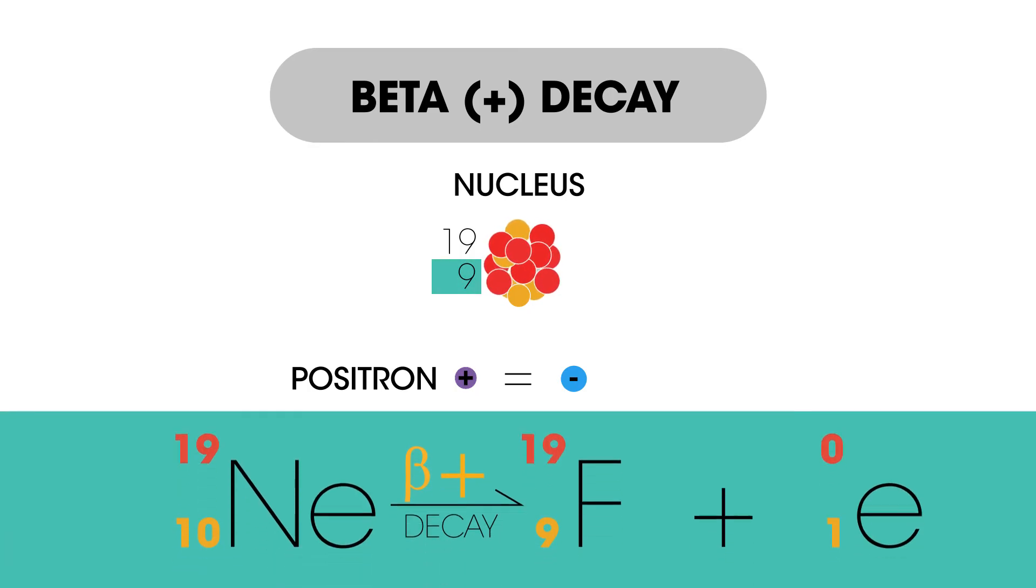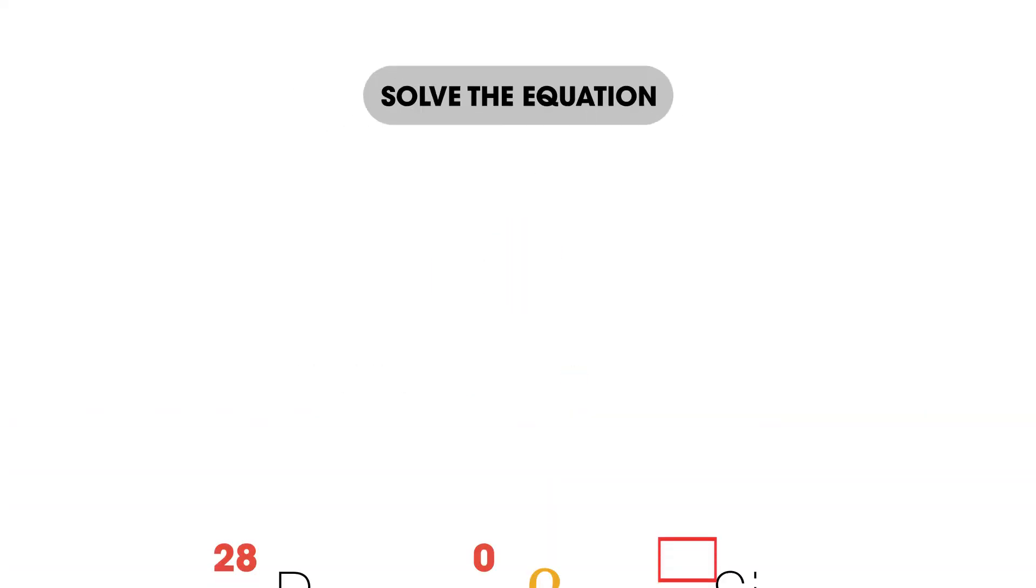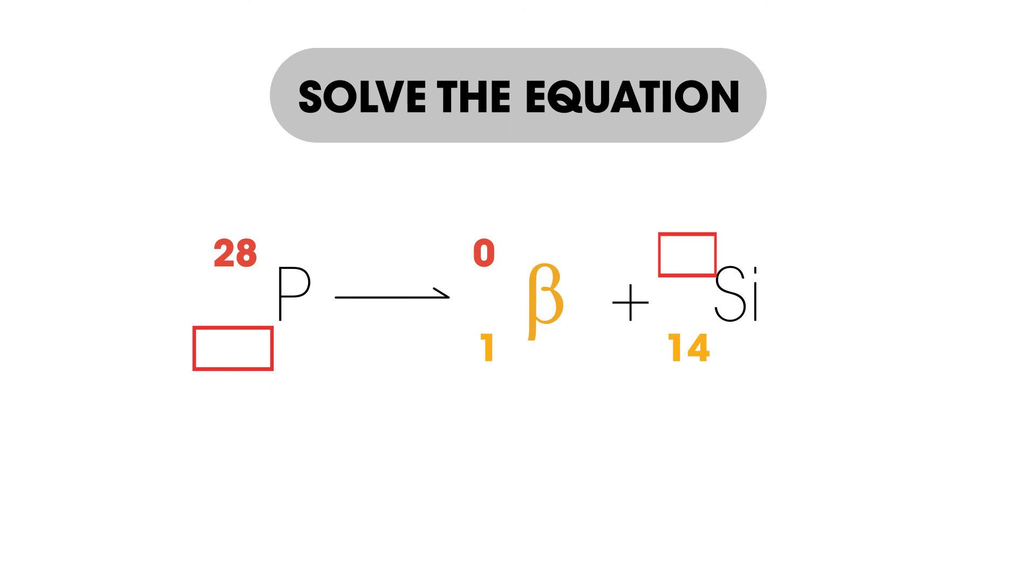The equation looks like this. Can you balance this equation? How did you do?